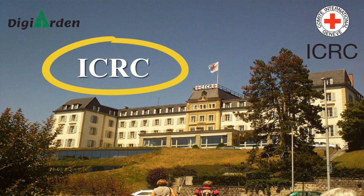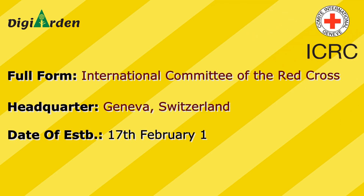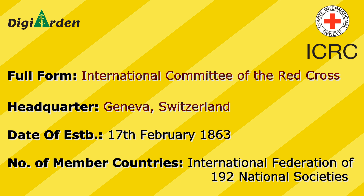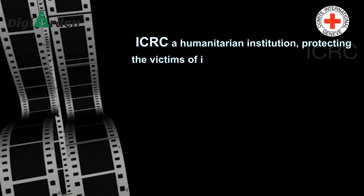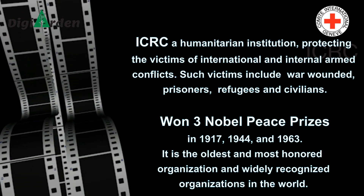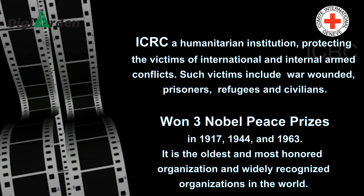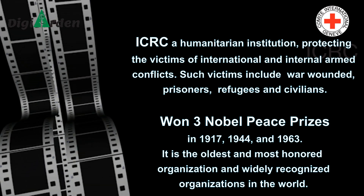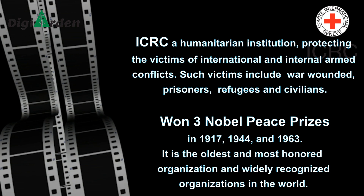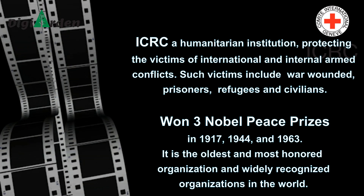Fourth is ICRC. Full form: International Committee of the Red Cross. Headquarter situated in Geneva, Switzerland. Date of establishment: 17 February 1863. Number of members: International Federation of 192 national societies. ICRC is a humanitarian institution protecting the victims of international and internal armed conflicts. Such victims include war-wounded, prisoners, refugees and civilians. Three Nobel Peace Prizes in 1917, 1944 and 1963 have been won by ICRC. It is the oldest and most honored and widely recognized organization in the world.